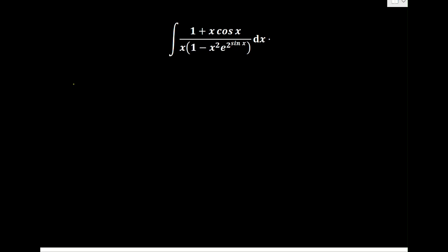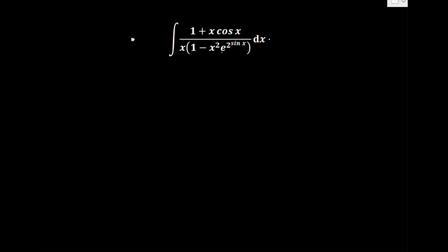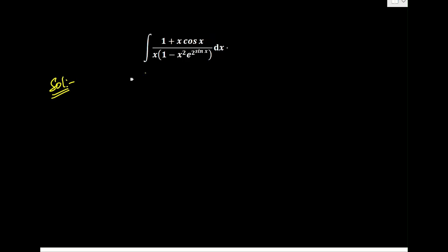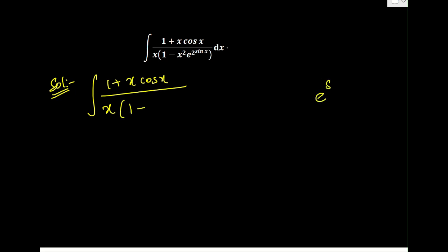We are given an integration of (1 + x·cos x) divided by x·(1 - x²)·e^(2sin x). Let us see how to solve this problem. We can rewrite e^(2sin x) as e^(sin x) the whole square, because a^m whole power n is a^(mn). So I will write it as x·(e^(sin x))² in the denominator.